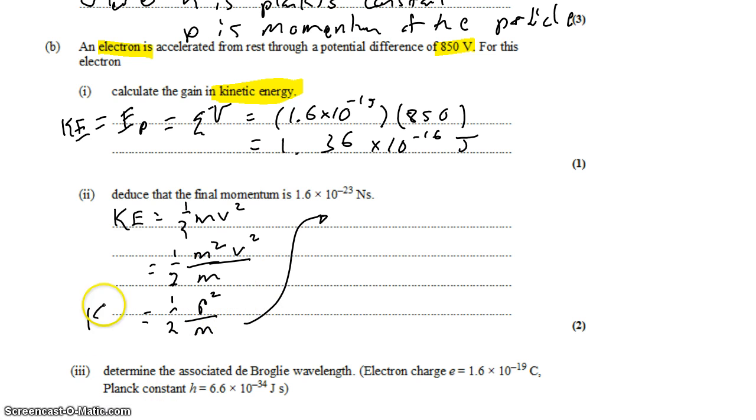This is a relationship you may want to memorize, or you can just re-derive it, because it shows up as a useful tool once in a while. Kinetic energy is one-half p squared over m, which we can rearrange to solve for momentum: p equals the square root of 2m times the kinetic energy.